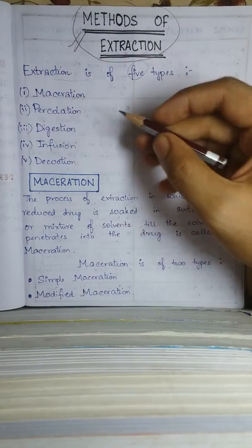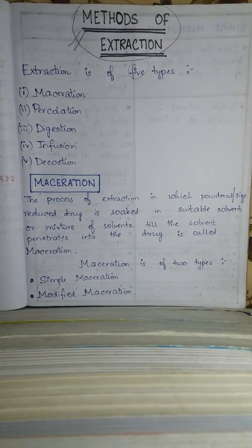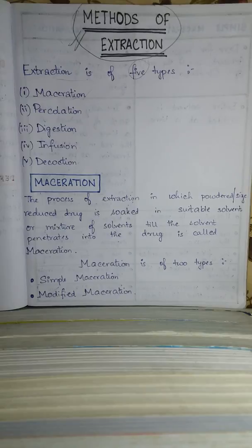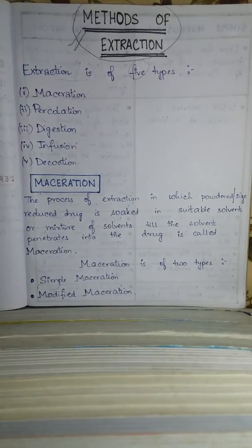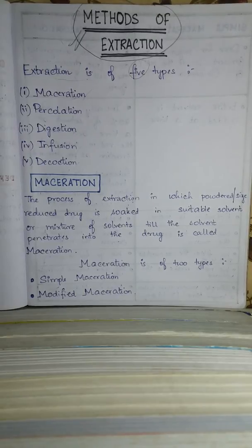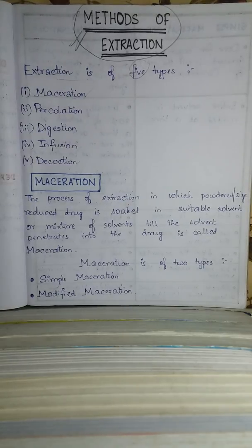The first method is maceration. The definition of maceration: it is the process of extraction in which a powdered or size-reduced drug is soaked in a suitable solvent or mixture of solvents until the solvent penetrates into the drug. This is called maceration.